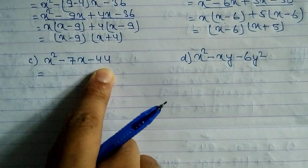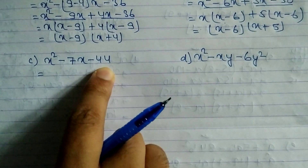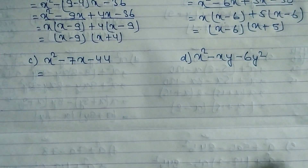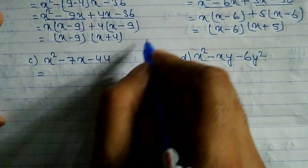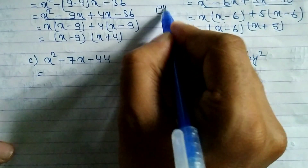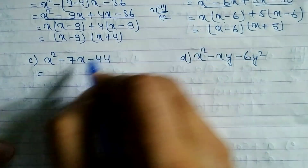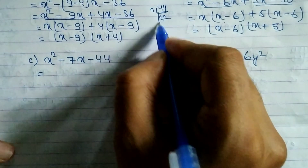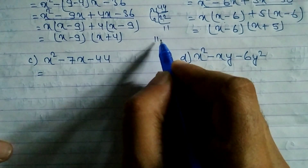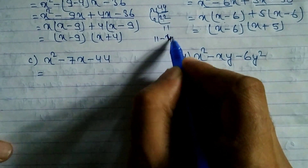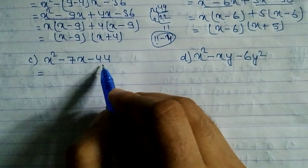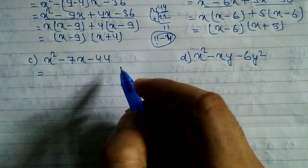Now look at problem c. We have to find factors whose multiplication is 44 and subtraction is 7. Try 2 and 22: 22 - 2 = 20, not 7. Try 11 and 4: 11 minus 4 equals 7, and 11 into 4 equals 44.